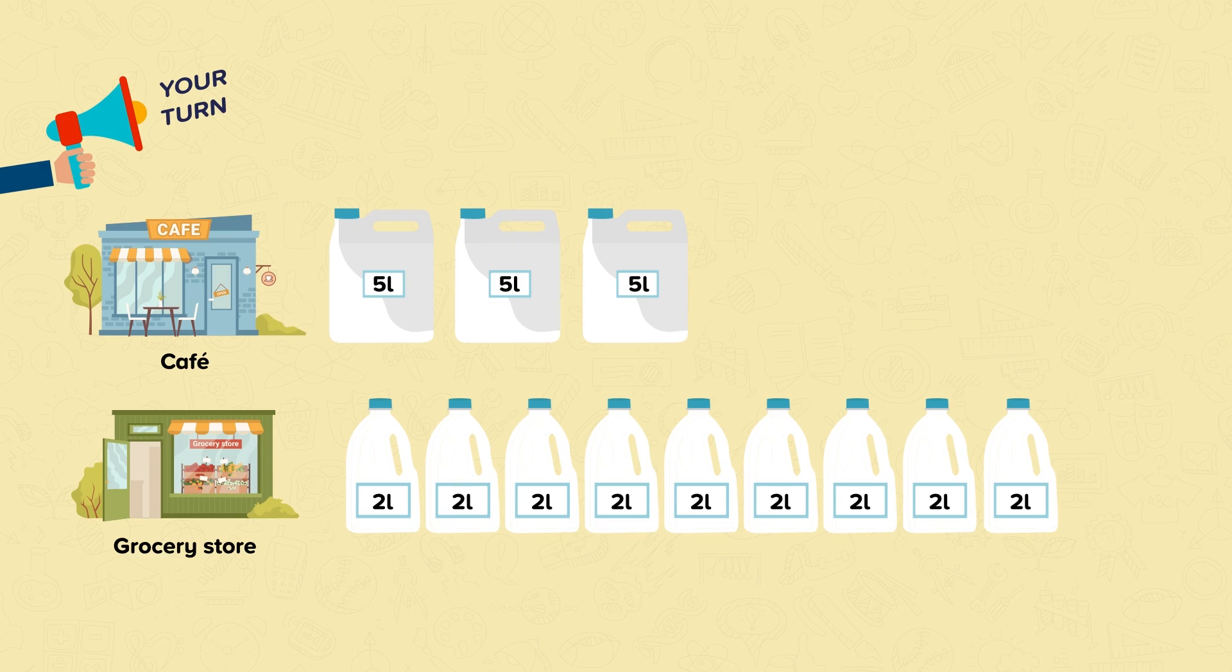The cafe orders 3 5-liter bottles of milk or 3 lots of 5 liters. 3 times 5 equals 15. So the cafe orders 15 liters.